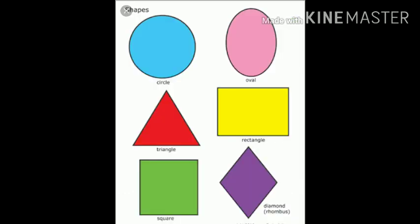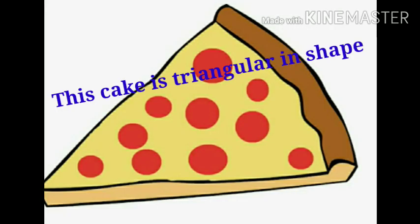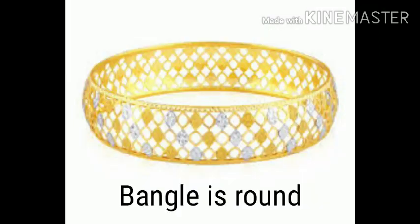Moving on to the next type of example, that is shapes. The cake is triangular in shape. Here triangular is a shape and adjective. Bangle is round. Round is a shape and adjective.